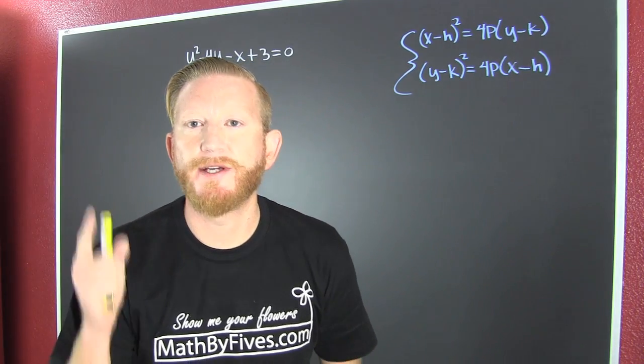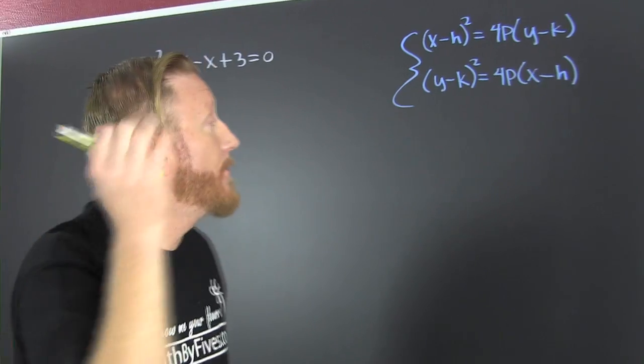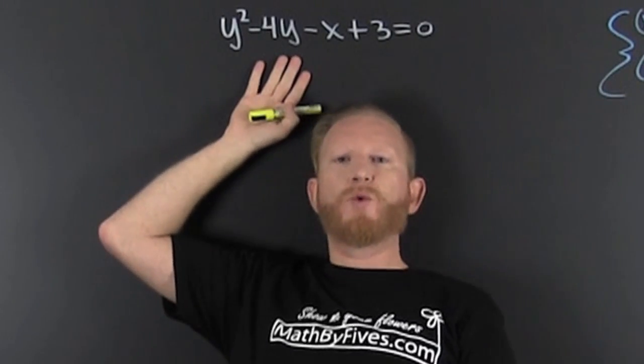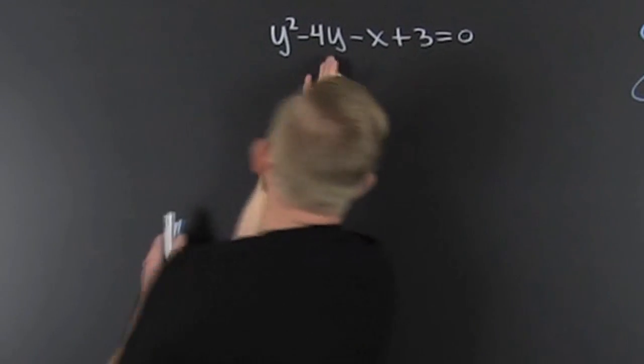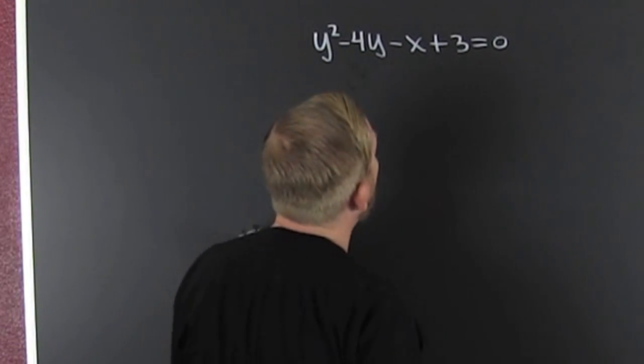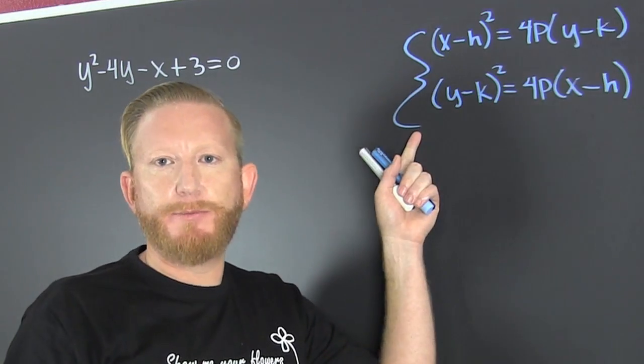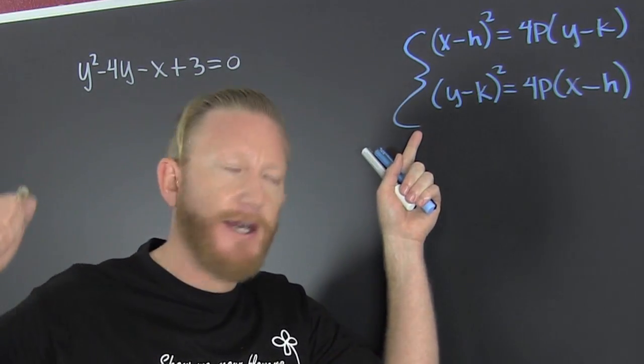To find the focus, directrix, and graph of what? Parabolas. We need this guy. What is it? Y squared minus 4y minus x plus 3. Which one of these two preferred forms is that guy?